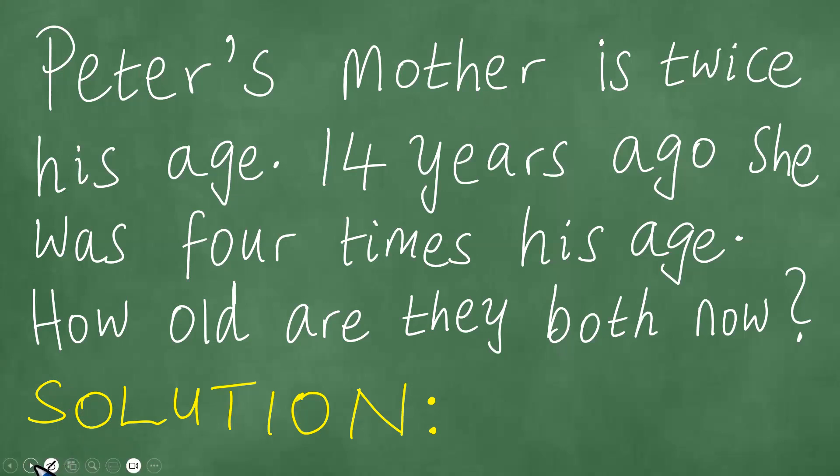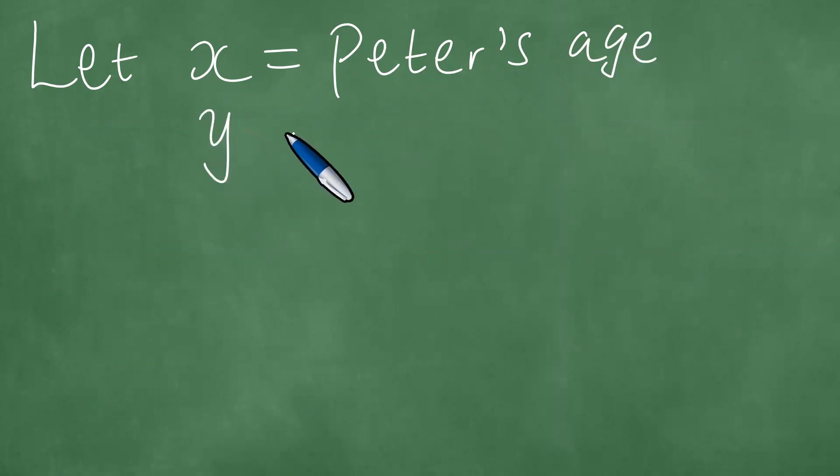So what do we then do? We let x be equal to Peter's age. And y is equal to the mother's age.